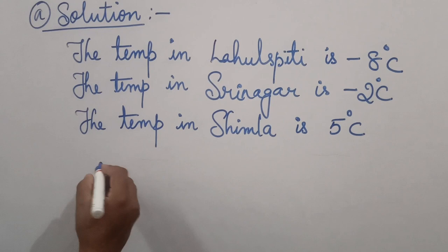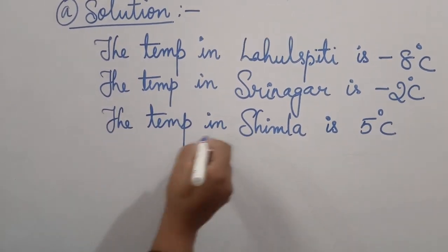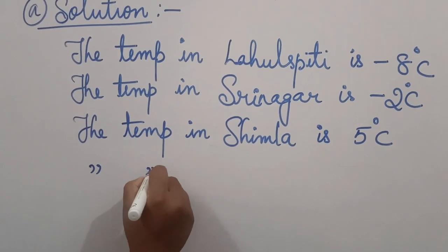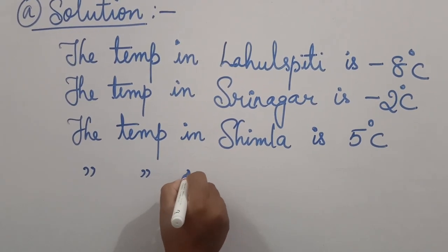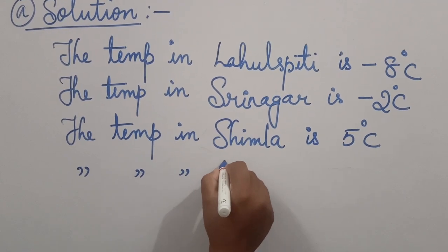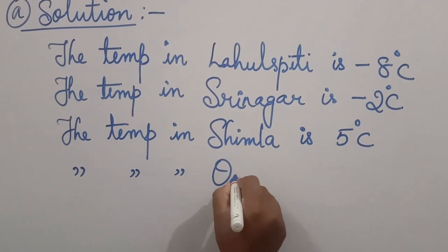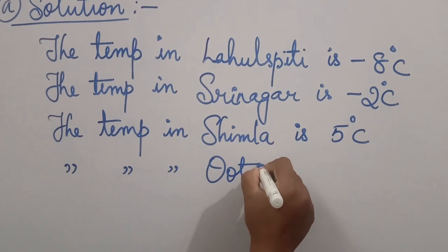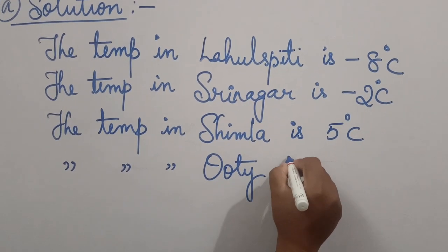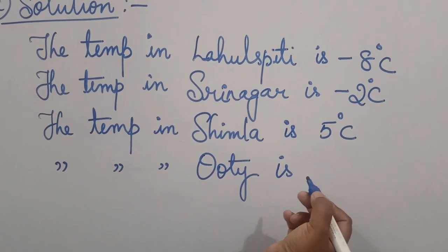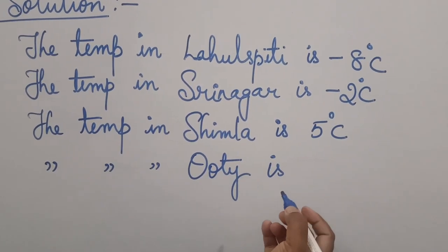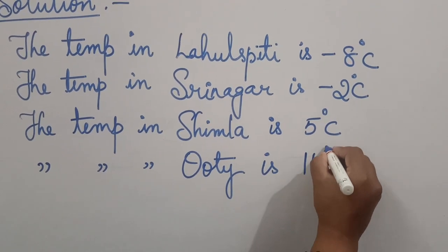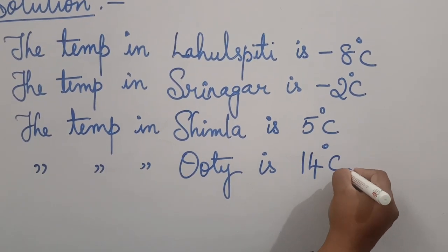The next one — the temperature in Ooty. Ooty is in South India. It is 14 degrees Celsius.